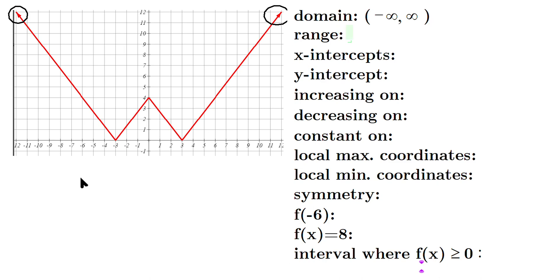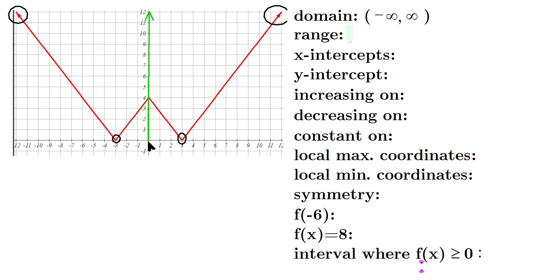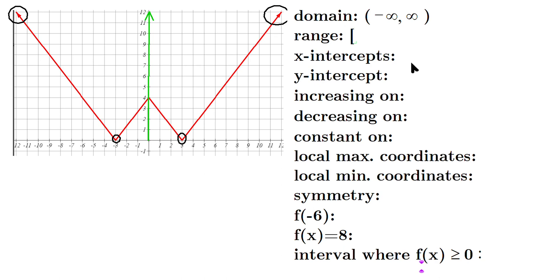Now let's look at the range. The lowest Y coordinate you can see is right here. For example, when X is three, the lowest Y coordinate is zero. When X is negative three, again, the lowest Y coordinate is zero. We can indicate the range by drawing along the Y axis, because those are the Y coordinates. Any value there can be reached, including zero, including four, and values all the way shooting off towards positive infinity. So the range is bracket zero, comma infinity, closed with a parenthesis, because infinity is a concept, not a number.